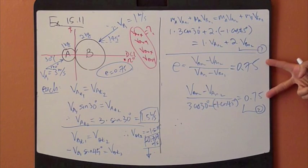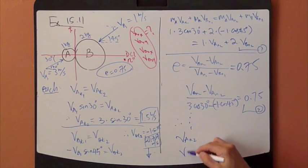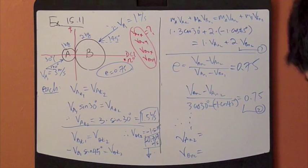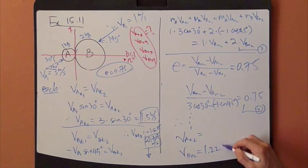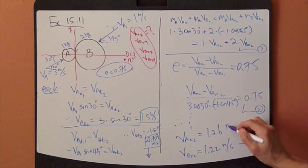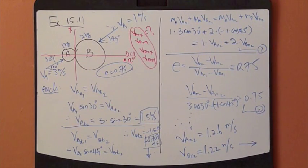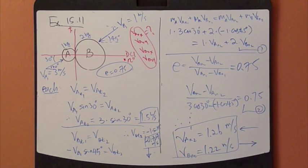Solving the two equations simultaneously, we can solve for VAN2 and VBN2. So it's actually quite straightforward for equations for oblique impact.